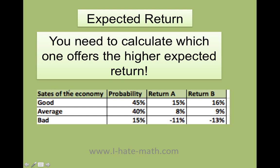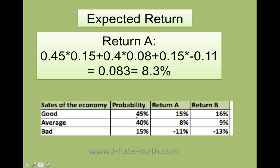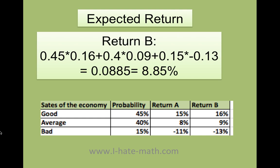How do I do that? Obviously the bigger the problem, the more calculations, but I just wanted to do a simple problem first. We're going to multiply the probability by the return, and then add all that up. So: 0.45 times 0.15, plus 0.40 times 0.08, plus 0.15 times negative 0.11. Even though I have a negative here, I still include it because remember, you have a probability of losing money. You just multiply the probability times the return and add all that up. And you're going to get this — multiply it by 100 — and it tells me that with all these probabilities, most likely I'm going to get an 8.3%.